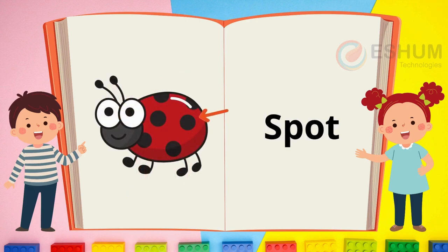Spot. You see an arrow pointing to a black spot. How many spots are on the bug? What animals have spots?